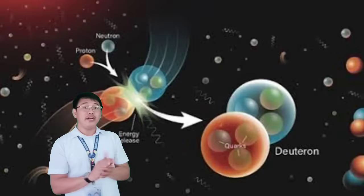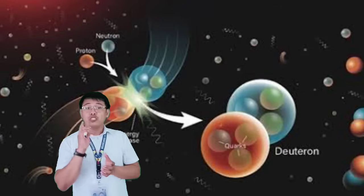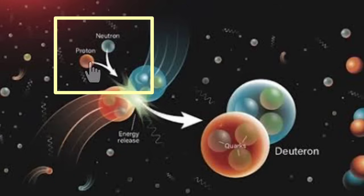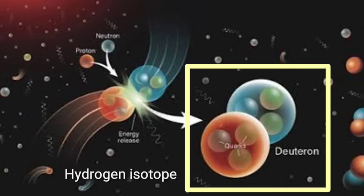As defined earlier, nucleosynthesis occurs when protons and neutrons combine. So when one proton combines with one neutron, deuteron, an isotope of hydrogen, is formed.